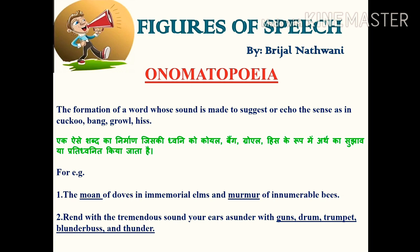The next figure of speech is onomatopoeia. This is the formation of a word whose sound suggests or echoes its sense, as in cuckoo, bang, growl, hiss. Words that denote sound — like clatter, bang — are onomatopoeia. For example: 'The moan of doves in immemorial elms and murmur of innumerable bees' — moan and murmur denote sound. 'Rend with the tremendous sound your ears, asunder with guns, drum, trumpet, blunderbuss, and thunder' — guns, drum, trumpet, blunderbuss, and thunder all denote sound. Therefore, all these are examples of the figure of speech onomatopoeia.